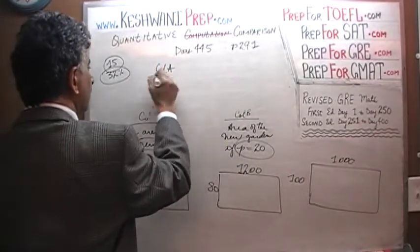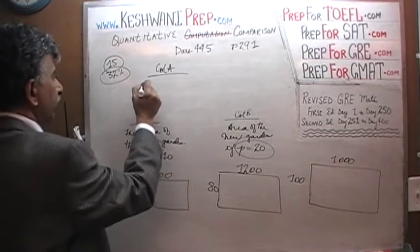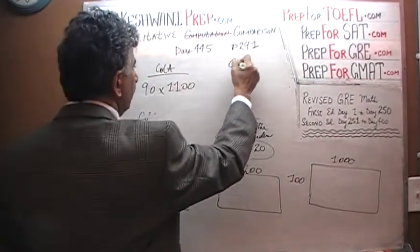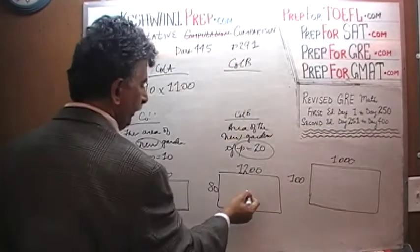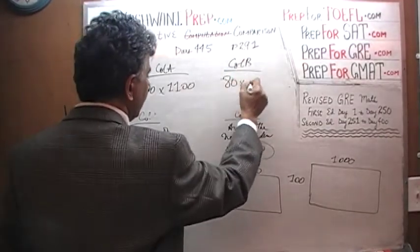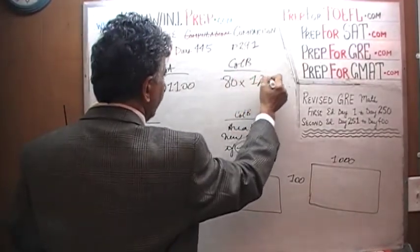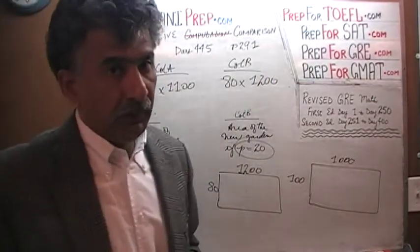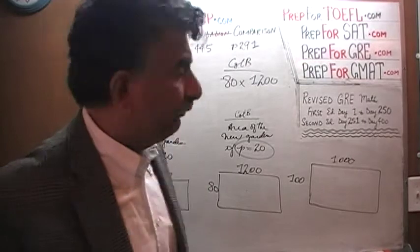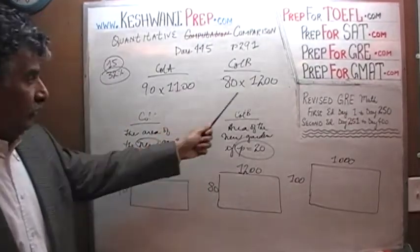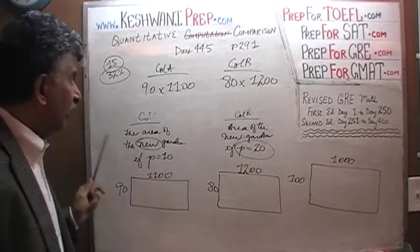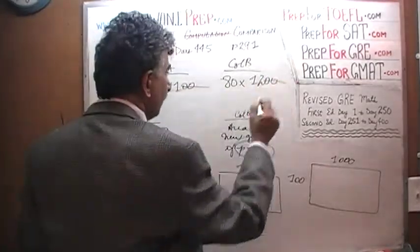So in column A, we have the area of this rectangle which is going to be 90 times 1100, and column B is 80 times 1200. Don't blink. It's going to be over soon. It's going to be over in seconds. I see two zeros here. I see two zeros there. Let's divide both columns by 100. These two zeros drop out. I see 80 here. I see 90 here. Let's divide both columns by 10. These two zeros drop out.